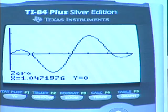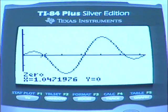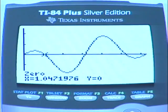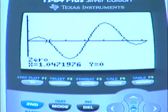The first x-intercept is 1.047, actually 3 times this value equals π, so this is nothing but π over 3.